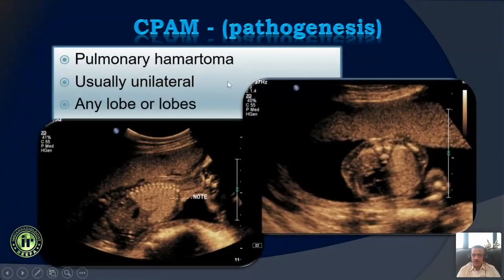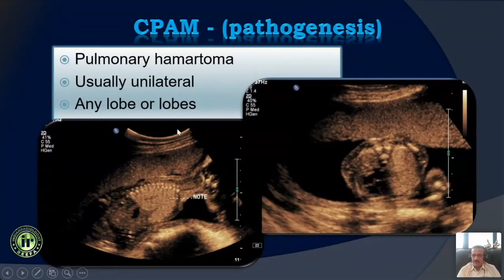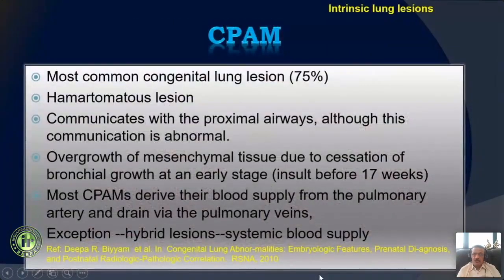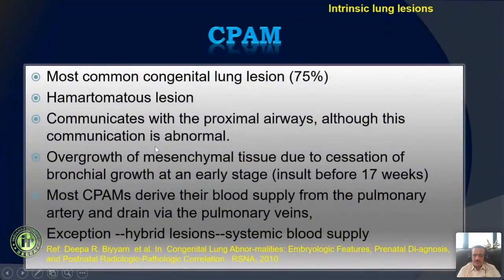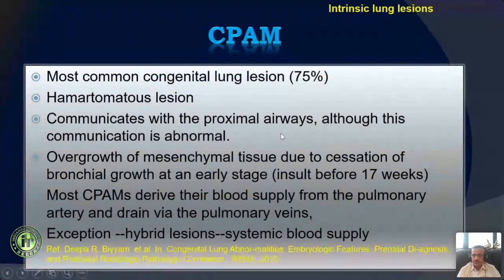CPAM is thought to be a hamartoma, with mesenchymal changes coming up within the lung. Usually it is unilateral, but it can affect any lobe, the entire lung, or multiple lobes. It is one of the most common congenital lung lesions — almost 75% of all lung lesions. The pathology is an overgrowth of mesenchymal tissue due to cessation of bronchial growth before 16 or 17 weeks of gestation. One hallmark of CPAM is communication with the proximal airways, though this communication may be abnormal.